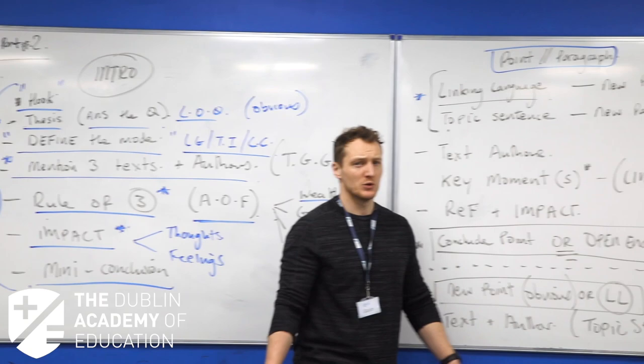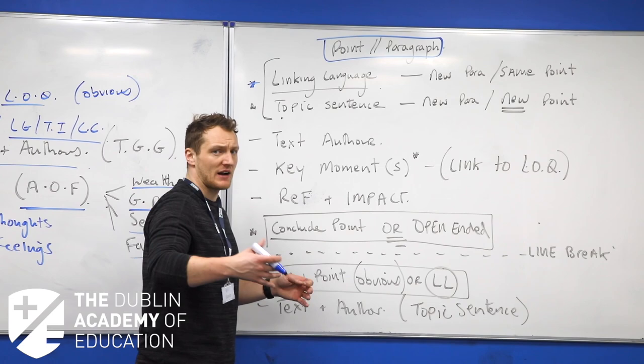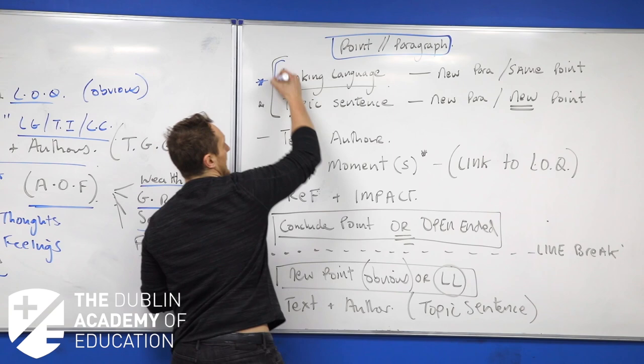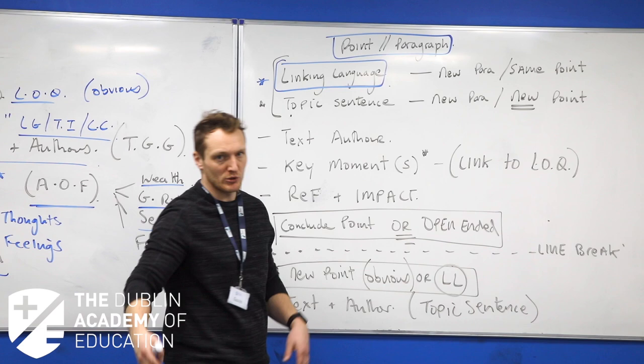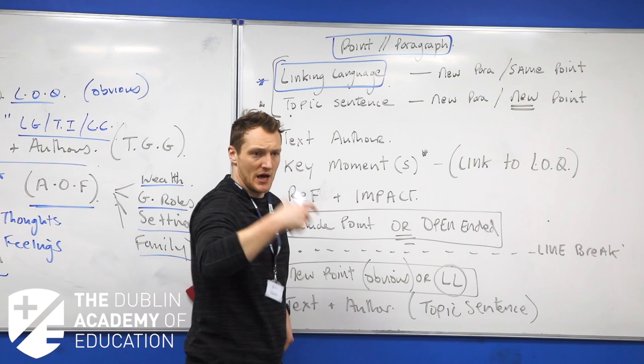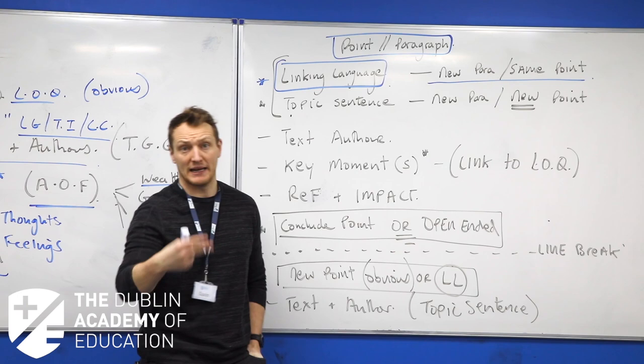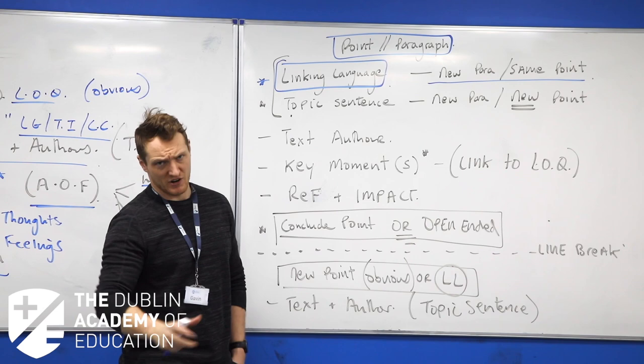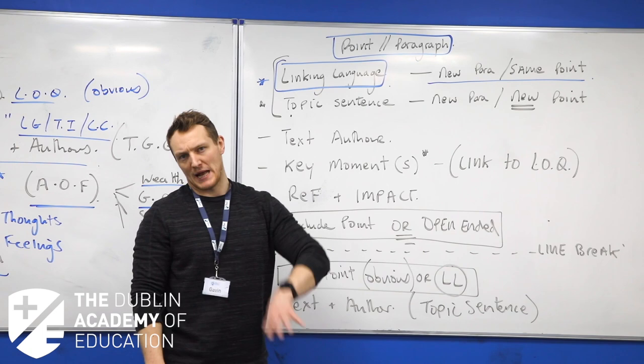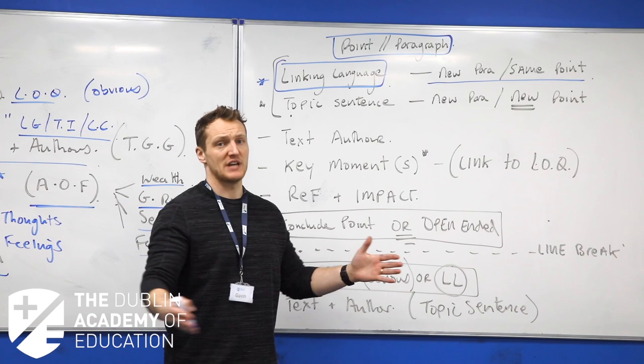If we are dealing with a paragraph that is simply moving on and adding to a point that we're making, well then we bring in a huge amount of linking language, as discussed in session two guys. You now have all that information and can start to implement this blueprint when you're writing these essays. If we're on a new paragraph but we're remaining on the same point, as said we are using our linking language - 'this is similar to,' or 'in text two this is completely different,' or 'text three stands in marked contrast to' - that's the type of linking language you're looking at.